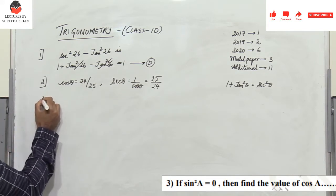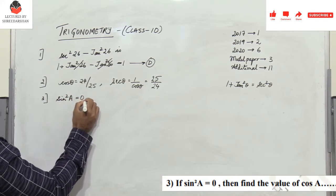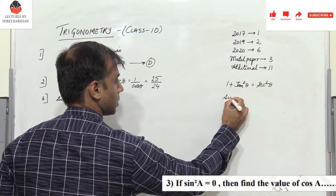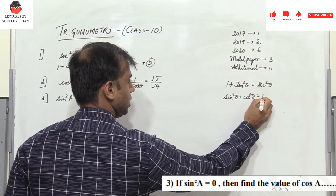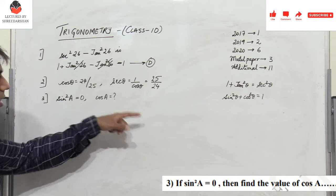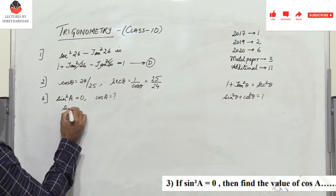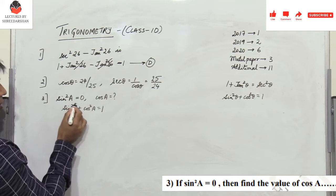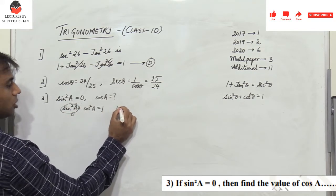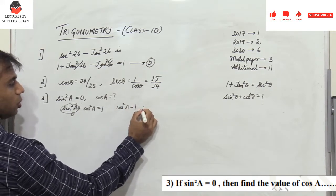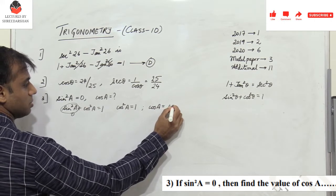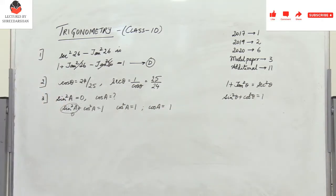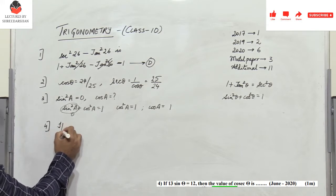Problem 3: if sin²a = 1, what is cos a? We apply the identity sin²θ + cos²θ = 1. With sin²a = 1, we get cos²a = 0, but wait — sin²a is given as 1 here, so 1 + cos²a = 1, meaning cos²a = 0... Actually the speaker derives cos a = ±1, taking the positive value, so cos a = 1.